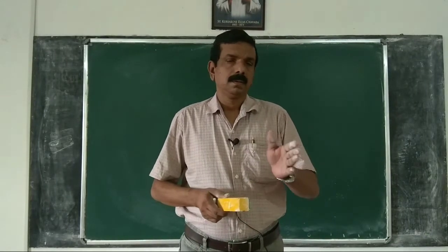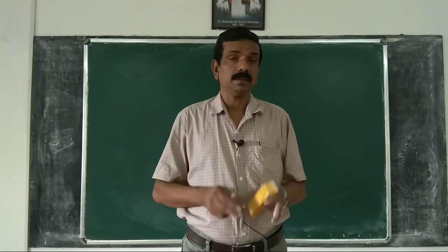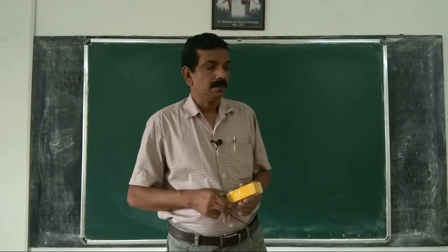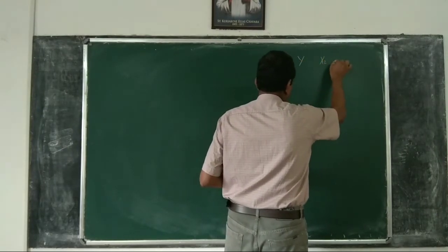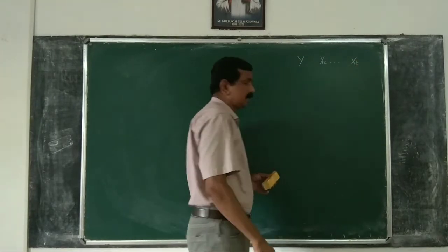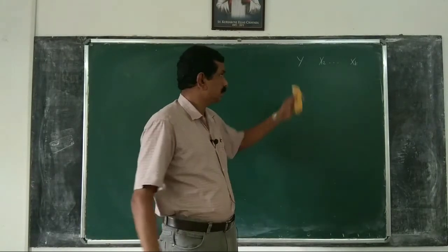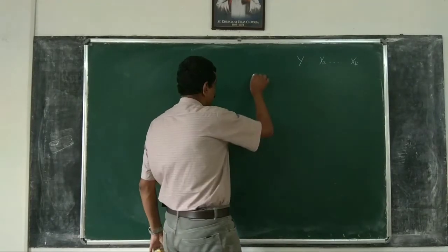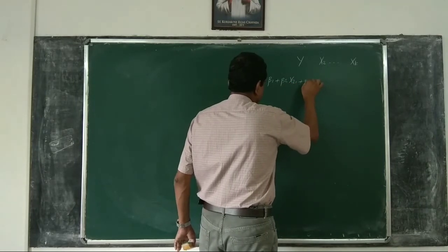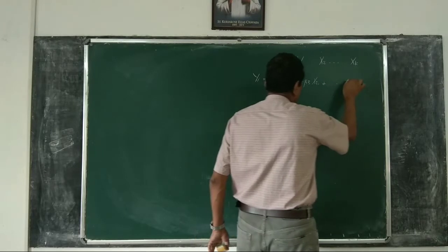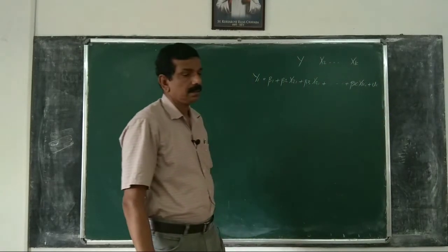Dear students, in this class we will explain how we represent a k-variable model in matrix form. A k-variable model with y as the dependent variable and x2, etc., xk as the independent variables — a model with k-1 independent variables — so a k-variable model. The PRF is written as yi equals beta1 plus beta2 x2i plus beta3 x3i plus etc., beta_k xki plus u_i. This is the PRF for the general k-variable model.